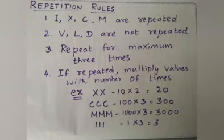And MMM: the value of M is 1000 and it's repeated three times, so the value is 3000. III: the value of I is 1 and it's repeated three times, so 1 times 3 is 3. This is how we apply the repetition rule.